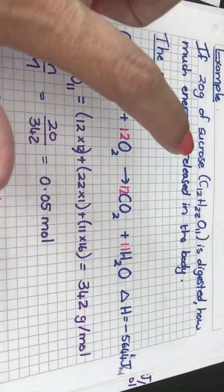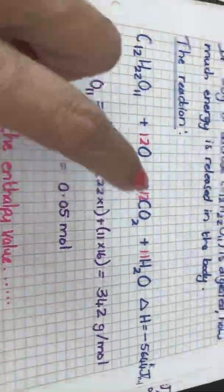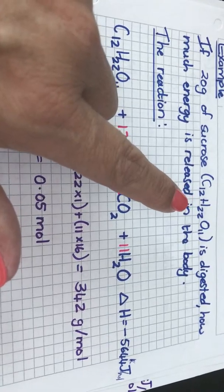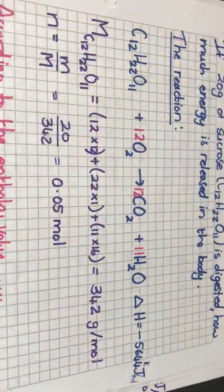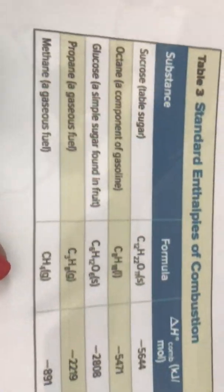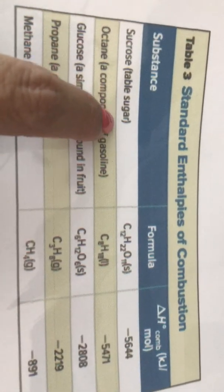If I want to find out how much energy the sucrose provides to the body it means I need to go find out what is the combustion value for change in enthalpy for sucrose. Now again I will find that on the table that is provided in the textbook for example where they show you sucrose which is table sugar.